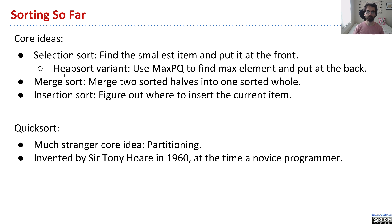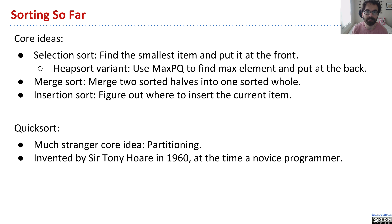Merge sort was about taking an array and then dividing and conquering — splitting it in half over and over, and then merging things so that eventually we do a big pile of merges. Using the power of bureaucracy, we're able to get our items into sorted order. Then finally, we had insertion sort, which was about taking an item and putting it in its appropriate place — a little like selection sort, but not focusing on the extreme, but rather focusing on the next item.